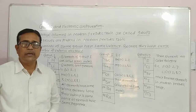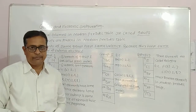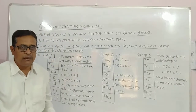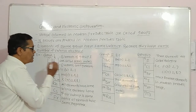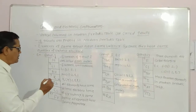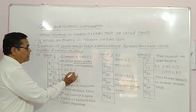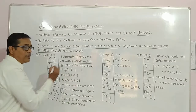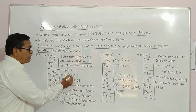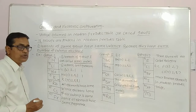They are called alkali metals because their oxides dissolve in water and form alkalis. Now let's study their electronic configuration. Lithium, atomic number 3, electronic configuration 2, 1 — its valence is 1. Sodium, atomic number 11, electronic configuration 2, 8, 1 — its valence is 1.